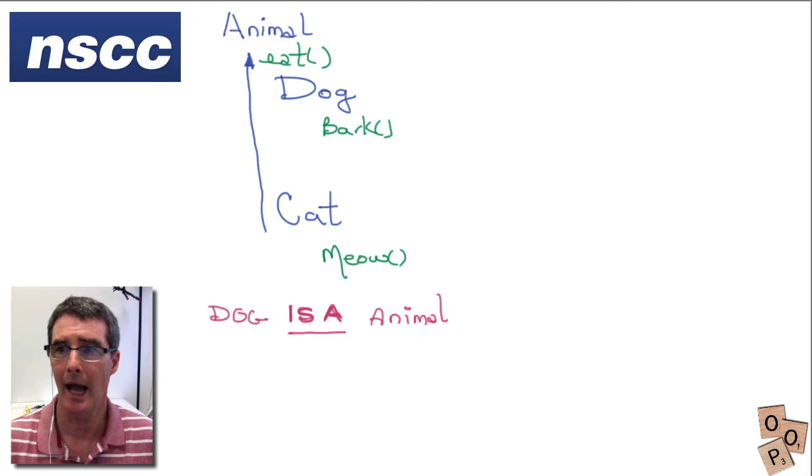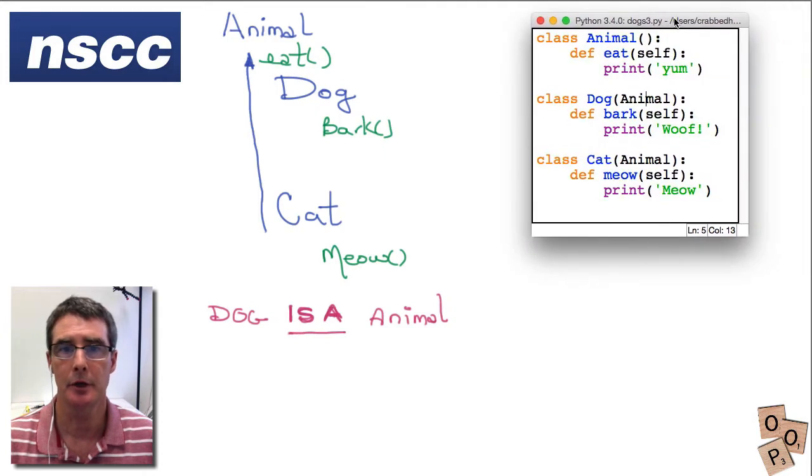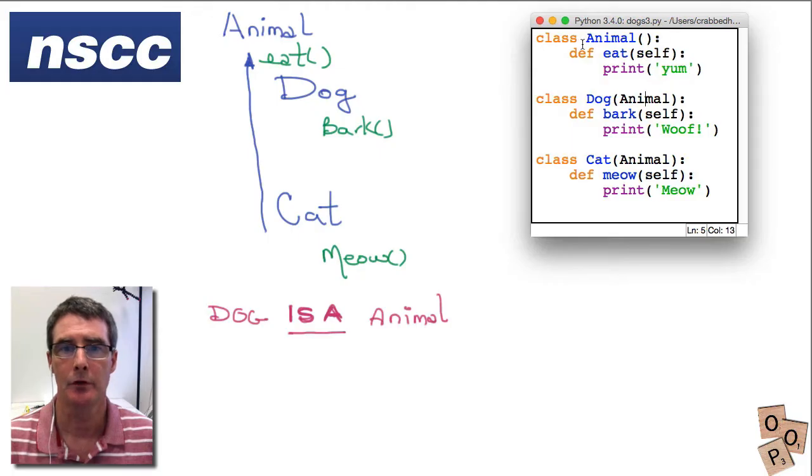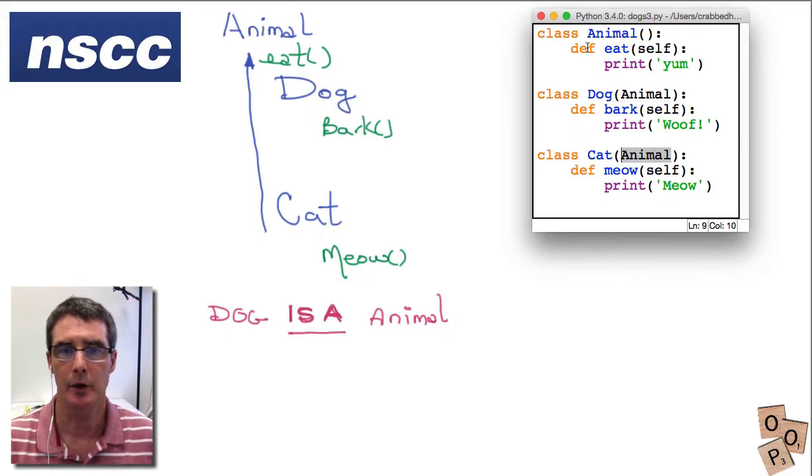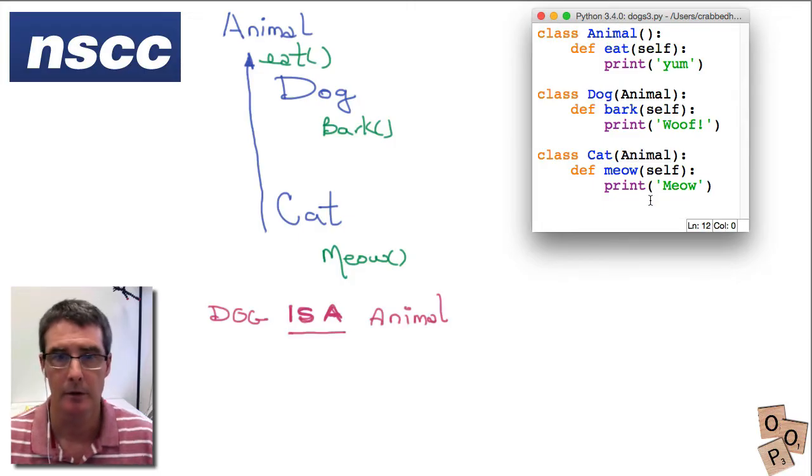Now how we would do that in code is shown here. So we have a class animal which is the superclass and dog and cat become subclasses because they're based on animal. Now the advantage here is that we only have one eat method so there's no chance of it getting out of sync with anything else. We simply need to maintain that one method and let's look at how we would get this to work.